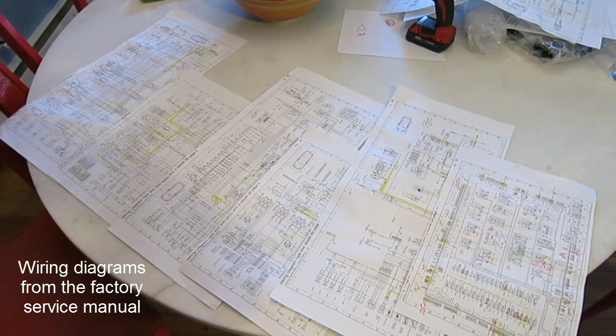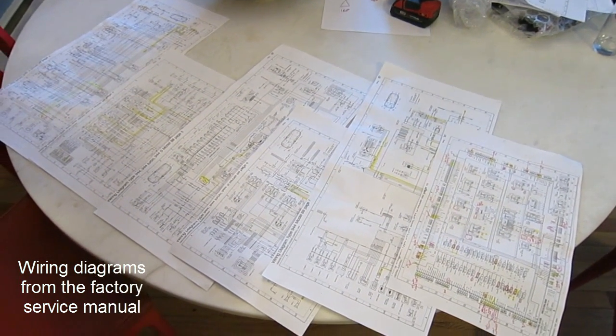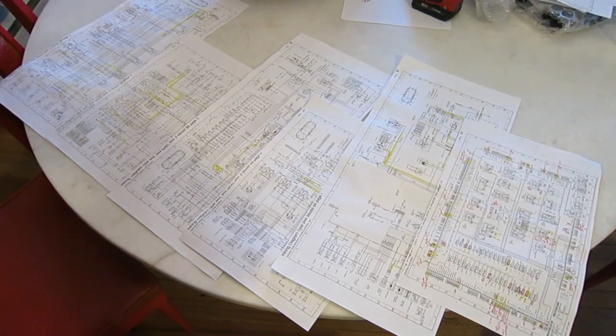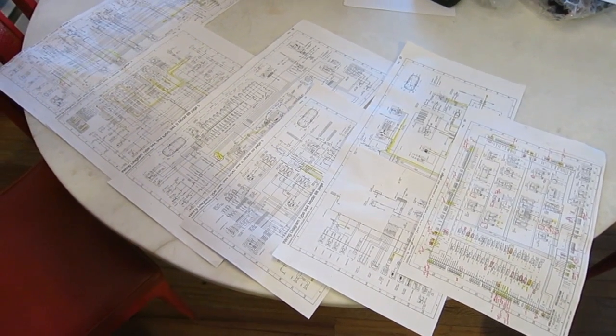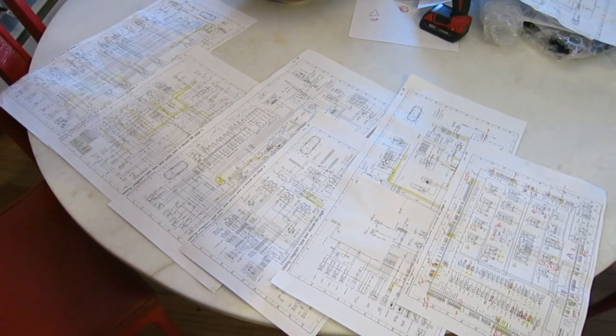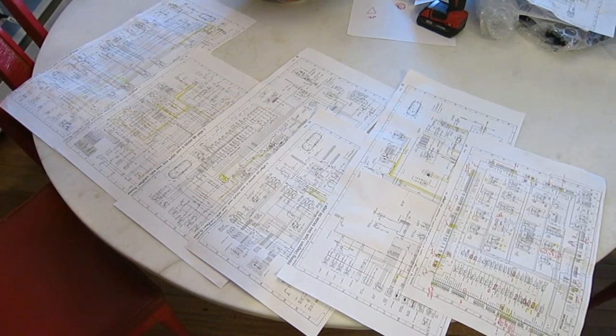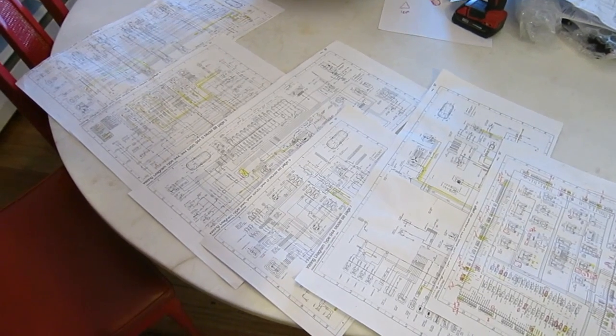I thought I would try to explain the 944 and other Porsche and probably other German car wiring diagrams a little bit. The 944s are from the 80s, so modern wiring diagrams are going to be more complex, and older cars are probably going to be less complex.